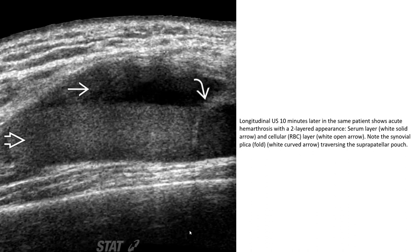This image shows hemarthrosis with a two-layer appearance: the serum layer and the cellular layer, with the synovial plica traversing the supra-patellar recess.